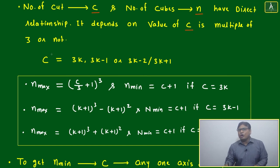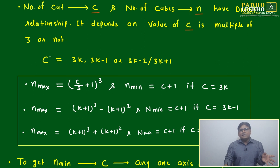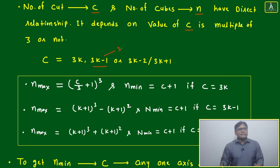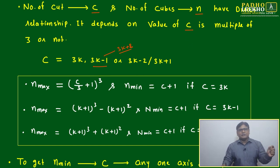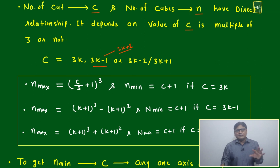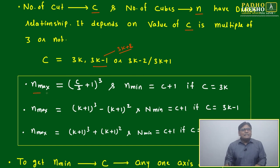Whether c is a multiple of 3 or not determines the formulation. If c is a multiple of 3, we use one formula. If not, there are two possibilities: c is of the form 3k+1 (remainder 1) or 3k+2 (remainder 2), which is the same as 3k−1. Since we divide across three axes, c can only be in the form 3k, 3k+1, or 3k+2 — only these three formats exist.